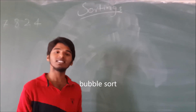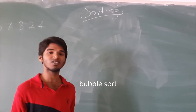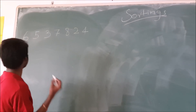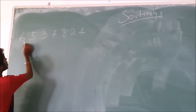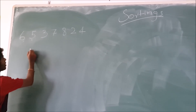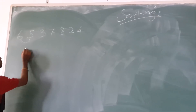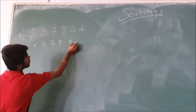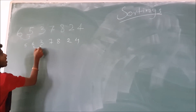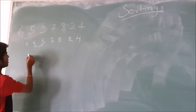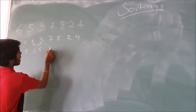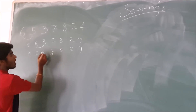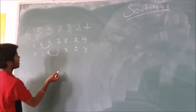In bubble sort, we arrange the largest element at the end. Thus in each iteration, the largest element gets settled down at the end. So if we consider the elements here: in the first iteration, 6 and 5 are compared and they get swapped. So we're left with 5, 6, 3, 7, 8, 2, 4. Next, 6 and 3 are compared. As 6 is greater than 3, they again get swapped. Next, 6 and 7 are compared — 6 is obviously smaller than 7 so no swapping will happen.